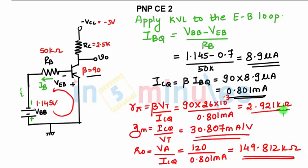So we have found the AC parameters which were asked in the question. Next point is to find the voltage gain. For that we need to draw the circuit under AC operating conditions.